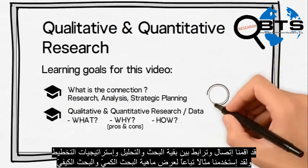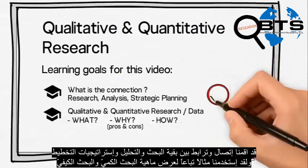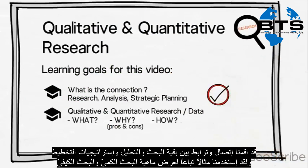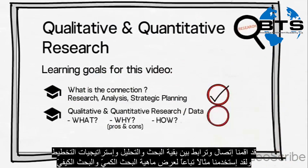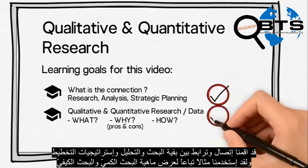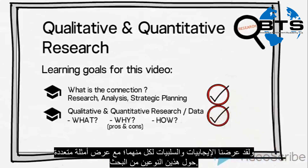We have now established a connection with the rest of the research analysis and strategic planning process. Subsequently, we have used an example to illustrate what qualitative and quantitative research is. We have highlighted the pros and cons of each and provided different examples of how we can conduct these two types of research.